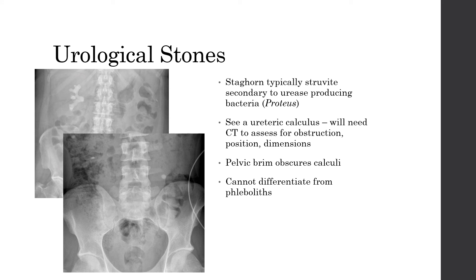Moving on from bowel pathology and looking at stones: we can see urological stones on abdo x-ray, but CT KUB should be the primary modality as it can show hydronephrosis and differentiate stones from phleboliths, which are calcifications of pelvic veins that can be impossible to distinguish on abdo x-ray alone. If the history is suggestive of renal colic, a CT KUB should be done — an abdo x-ray isn't enough to rule out, partly because one of the narrowings of the ureter is as it passes over the pelvic brim, where stones can be trapped and lost against the overlying pelvic bone. The upper image shows a staghorn calculus, often caused by chronic Proteus infection producing struvite stones that form in the renal calyces.